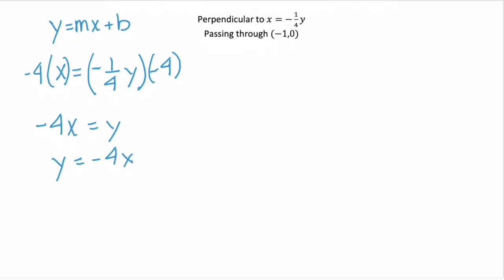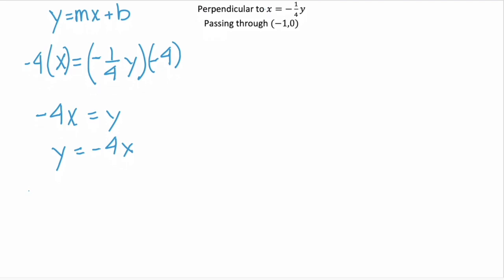And if y equals negative four x, then our slope here is equal to negative four, or negative four over one.